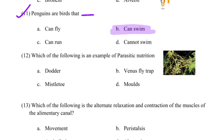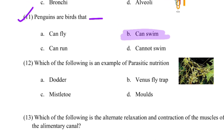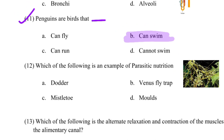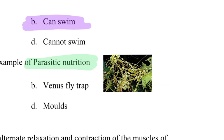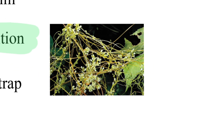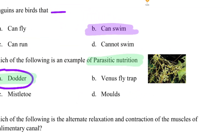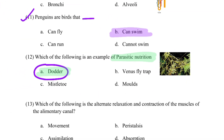Which of the following is an example of parasitic nutrition? Parasitic nutrition involves an organism living on a host. The correct answer is dodder — dodder is a parasitic plant and a classic example of parasitic nutrition.